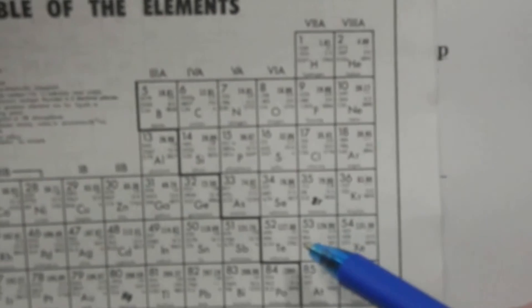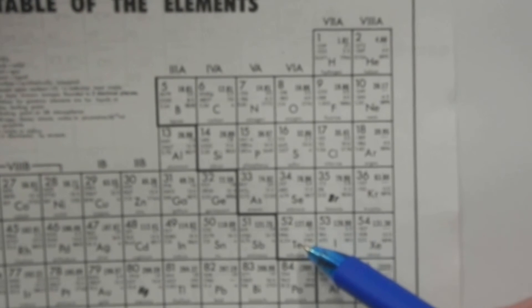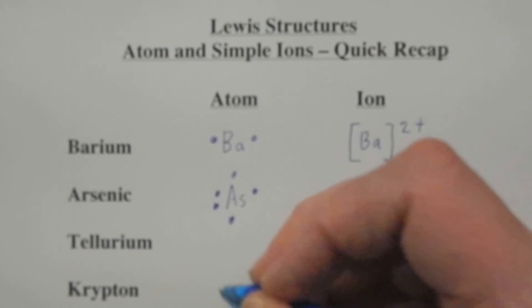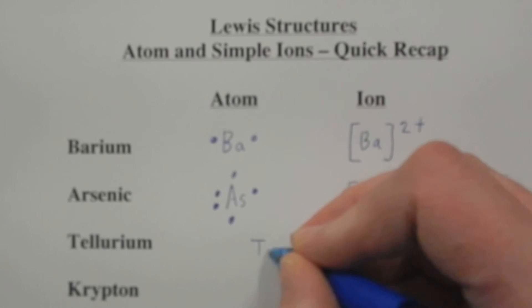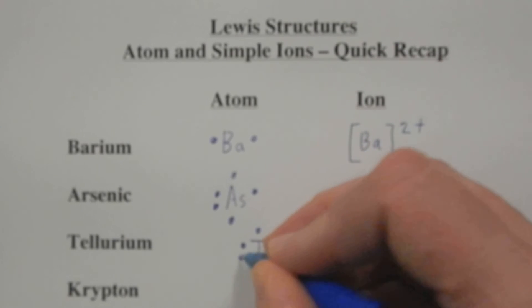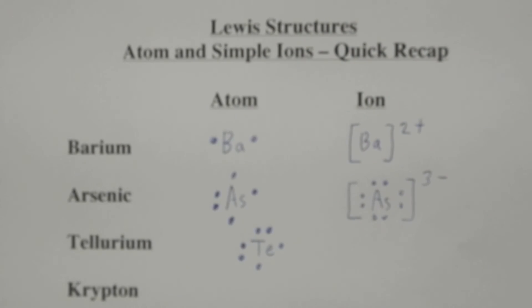Tellurium, an interesting chemical that can make you smell like rotten eggs if you ingest a very small amount of it. Group 6. So we put in our TE right here, and we go 1, 2, 3, 4. Dot on four sides. And we pair off two. So we get two lone pairs, two bonding electrons.